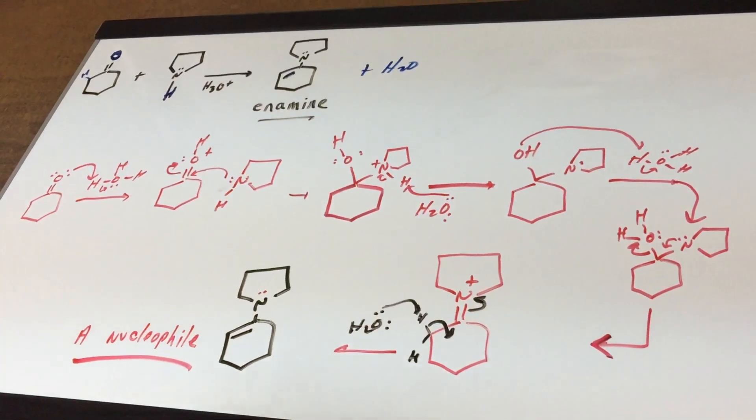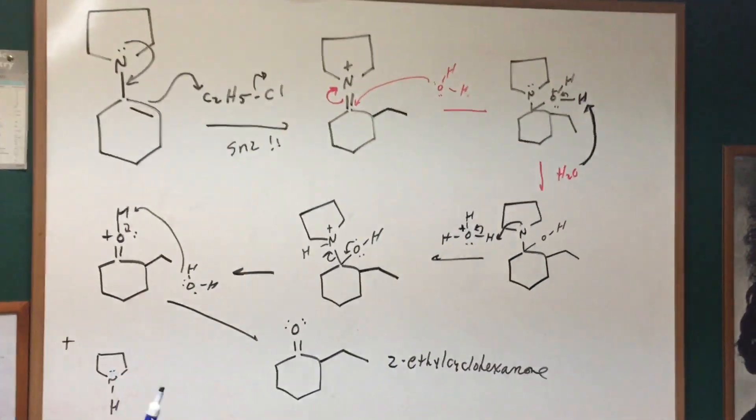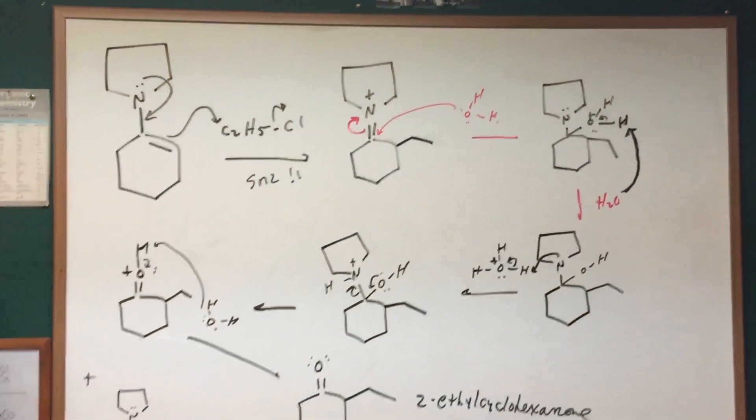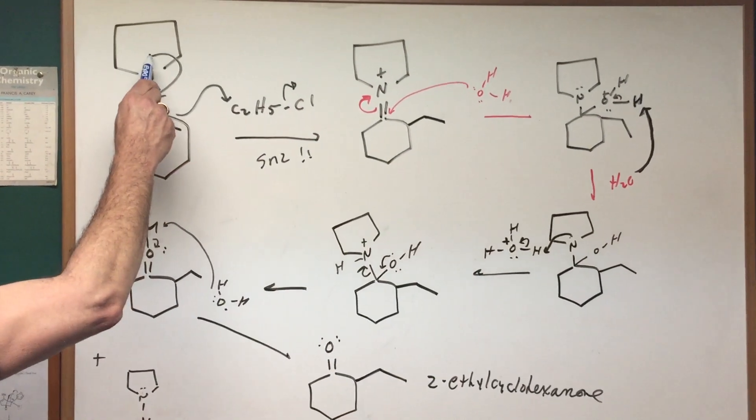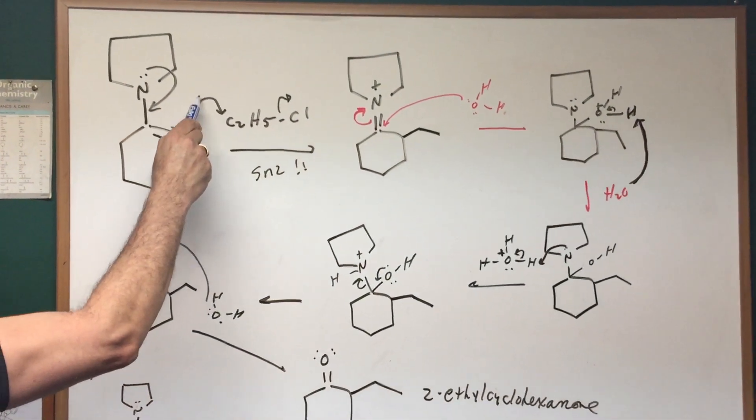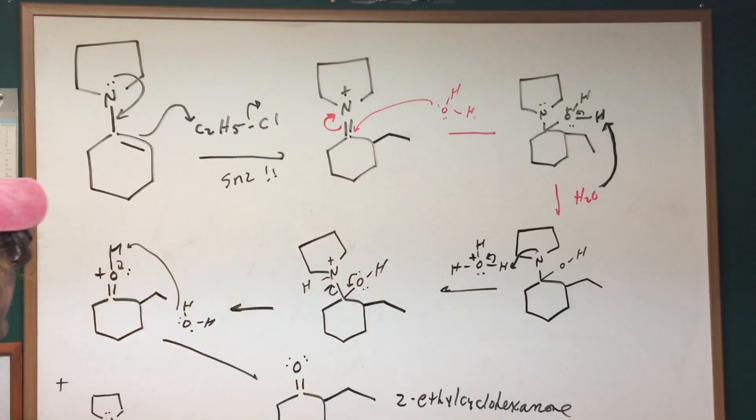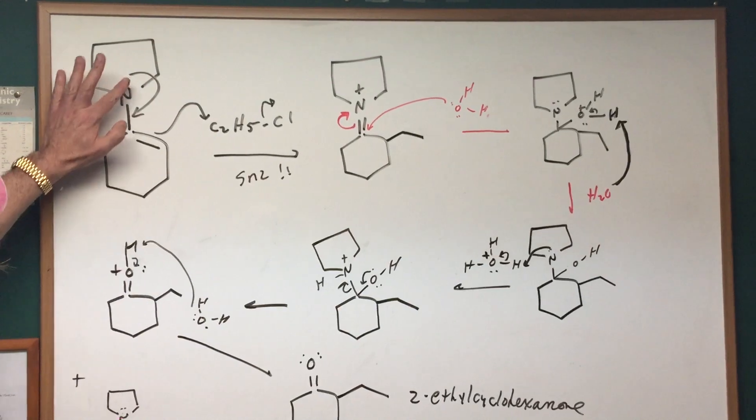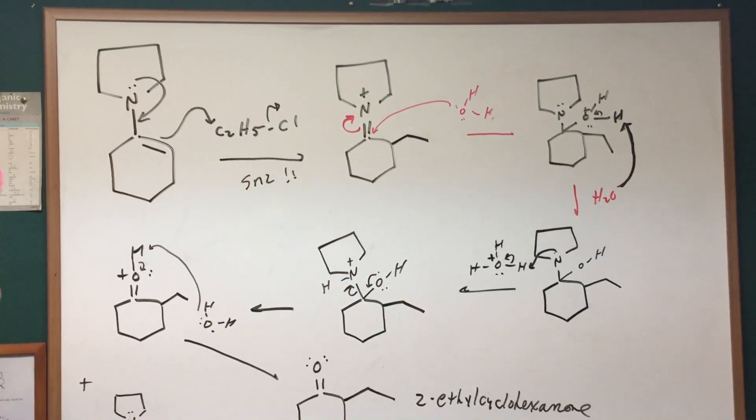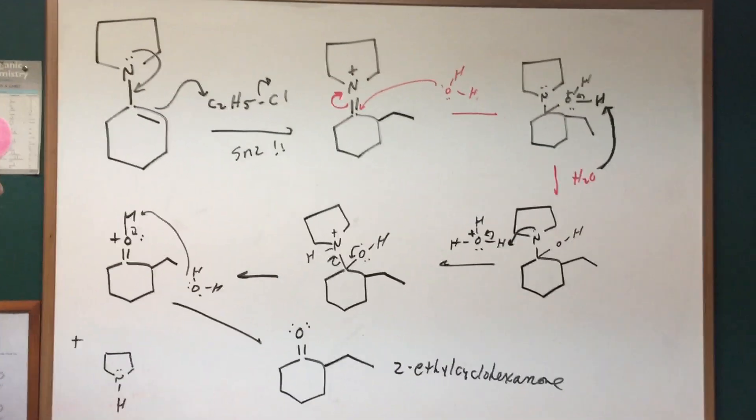So come over to here, I wrote for you what would happen and I'll show you how an enamine could function as a nucleophile. Here we go. In the very first step, the electrons move down and I do a simple SN2 and I capture the alkyl group. I hope that step is clear.